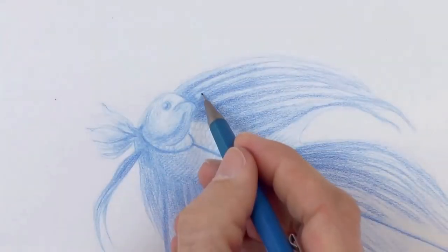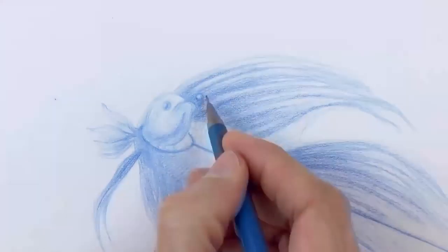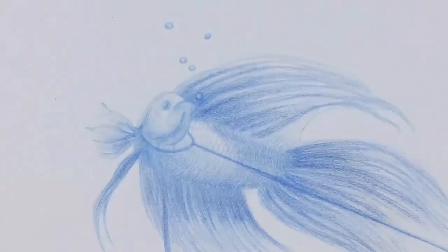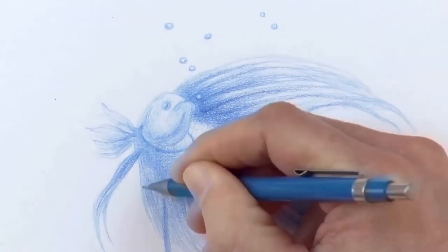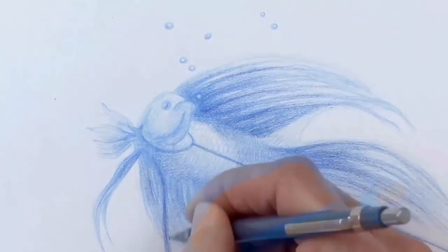With a fine eraser or with the corner of a regular one, we do a little circle, which will be the first of a series of bubbles. Had I thought of this earlier, I would have left it blank from the beginning.